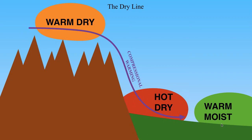Ahead of that current of westerlies, you've got warm moist air occurring at the surface. The dry line separates the warm moist air, which you typically find ahead of an approaching cyclone, from the hot dry air behind that cyclone coming from the Rockies. The dry line is a boundary that separates the really warm moist air over the plains from the really hot dry air coming from the Rockies.